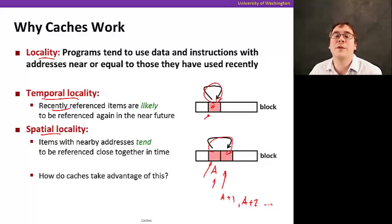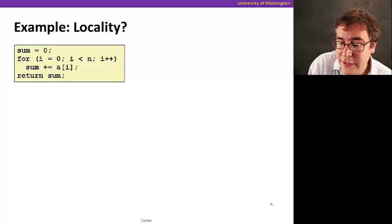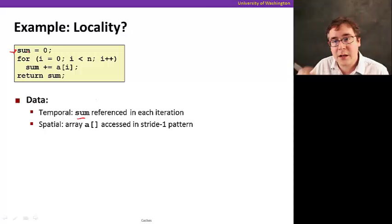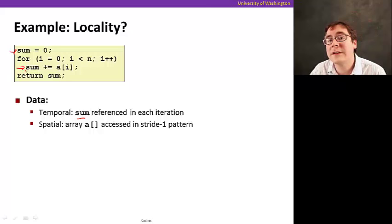So let's see an example of a program that has locality. Suppose you have this loop here, and this loop is iterating over array a and adding it to the sum variable. Where is locality here? Let's start with data. Well, so with data, the variable sum is referenced multiple times. We act over and over again here inside our loop. Each iteration of the loop reads it and writes it. It reads it because you're doing sum equals sum plus a of i.